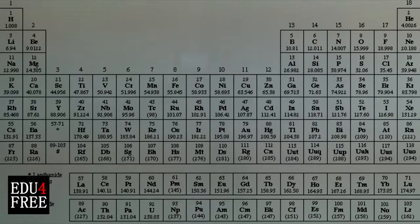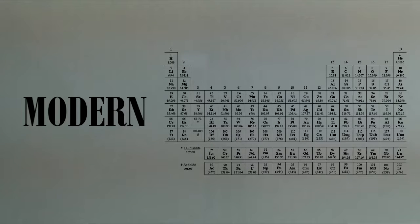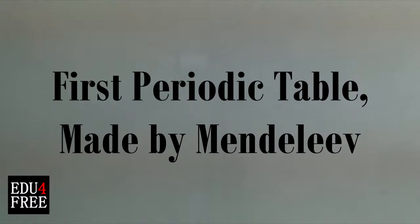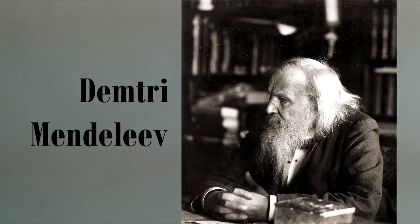This is the shape of the periodic table — specifically, this is called the modern periodic table. There were other periodic tables before this one, like the first periodic table which was made by the scientist Demetri Mendeleev, and it looked like this.